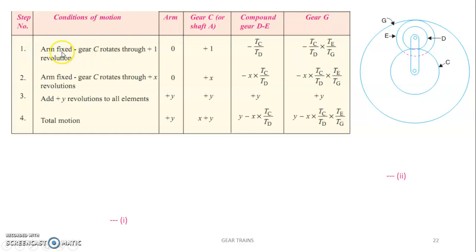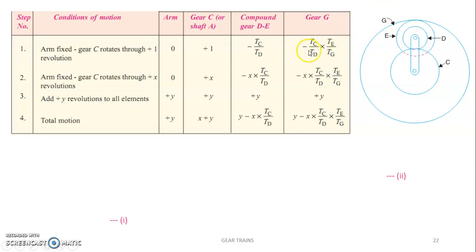Fix the arm and give one rotation to gear C in the clockwise direction. C is in mesh with D, so the train value is T_C / T_D with a minus sign because the direction is opposite. Similarly, gear C drives D, and E drives G. The direction of gear G and gear C are opposite, giving a minus sign. The train value is the product of teeth on drivers divided by product of teeth on followers. Once you have that, multiply by X and add Y to get the full expression for each gear's speed.